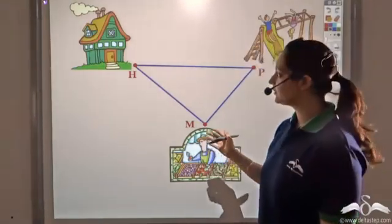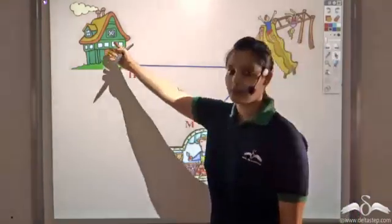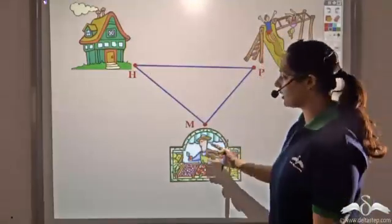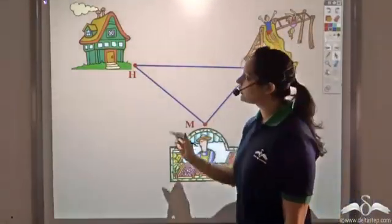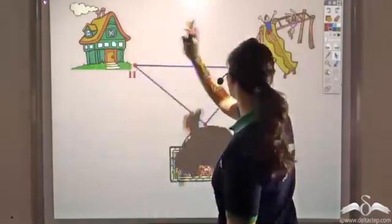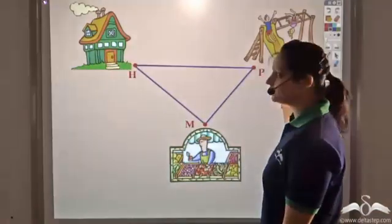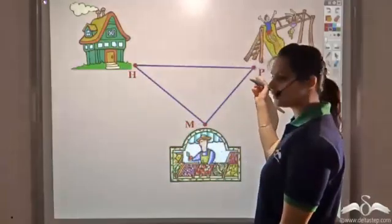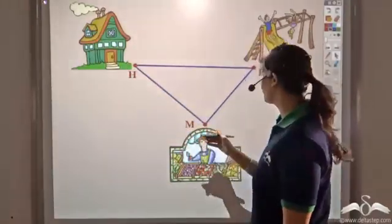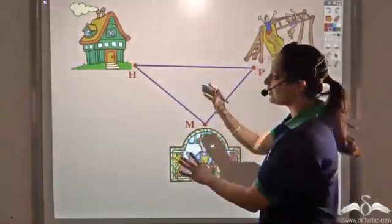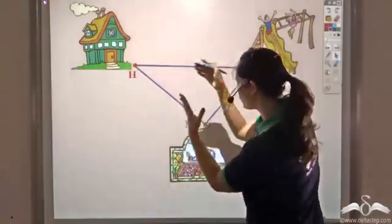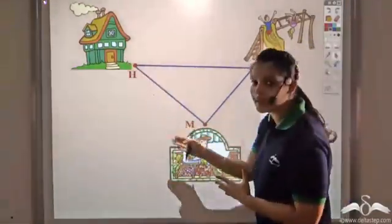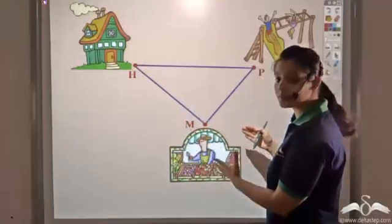Let's say you have a triangle with three points: your house as point H, playground as point P, and market as point M. Now if you want to go from your house to the playground, what route would you take? You can directly go to the playground, or you can go to the market and then come to the playground. If you go from house to the market and then to the playground, it would take much more time — it's a longer route.